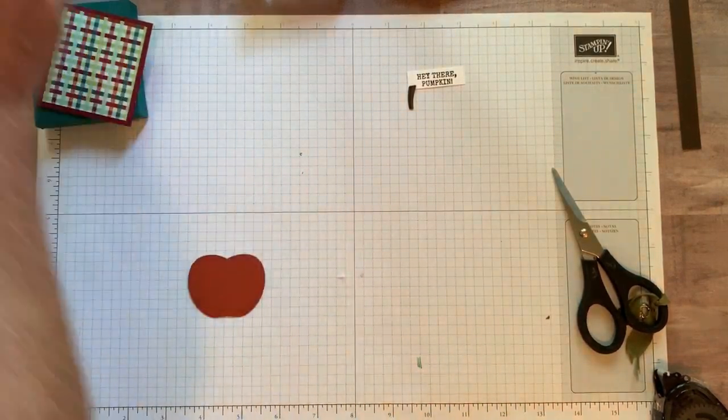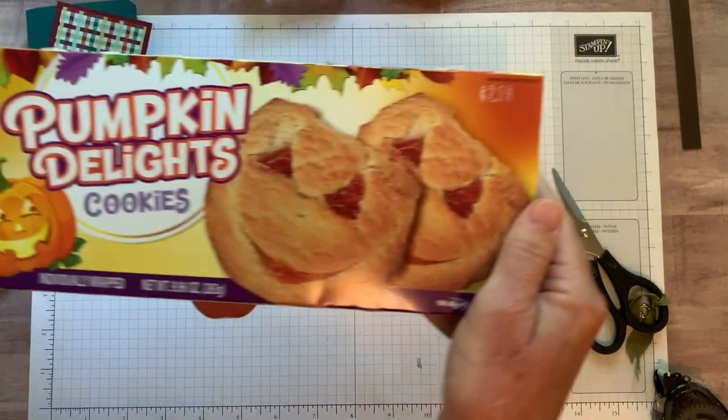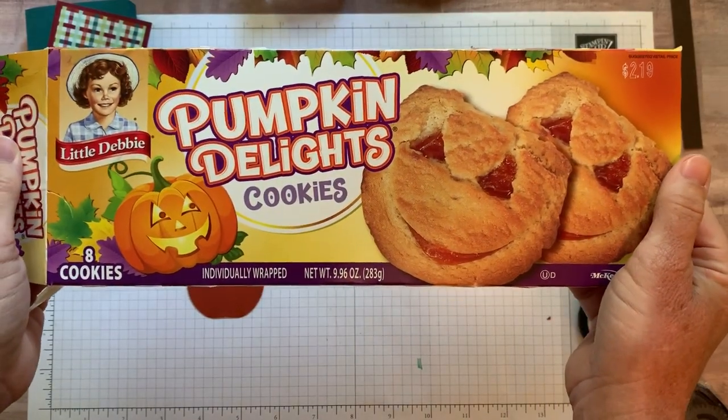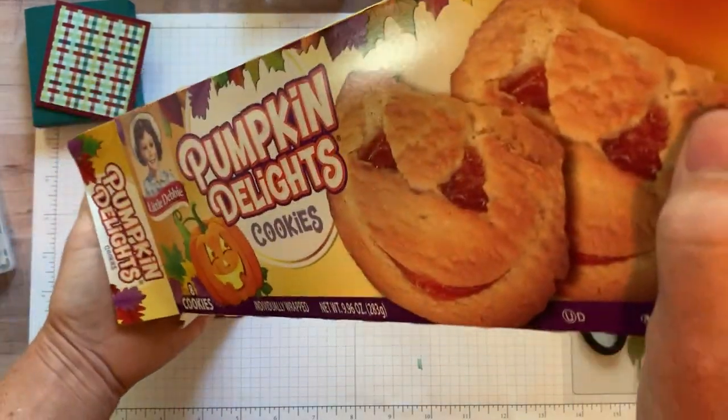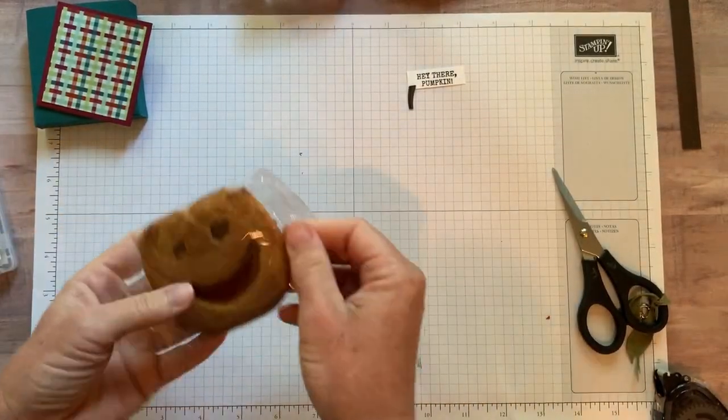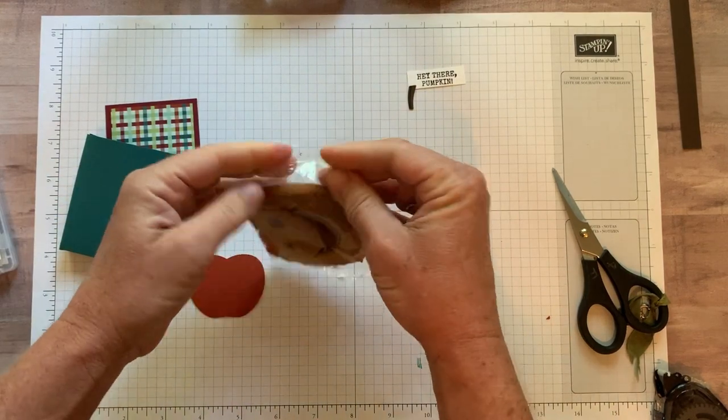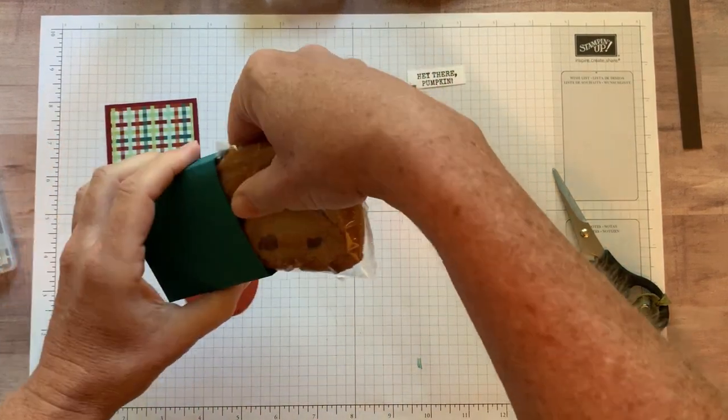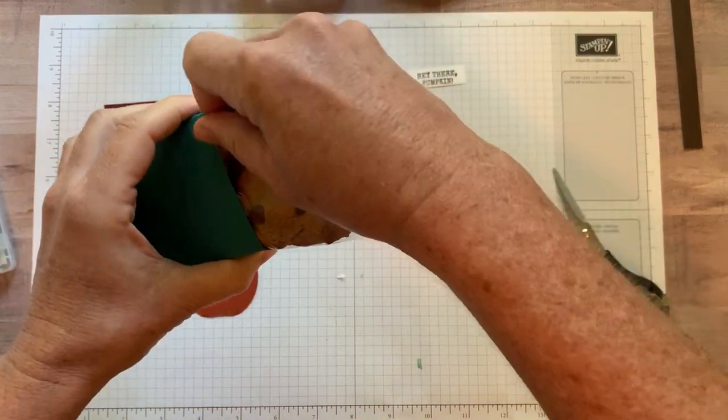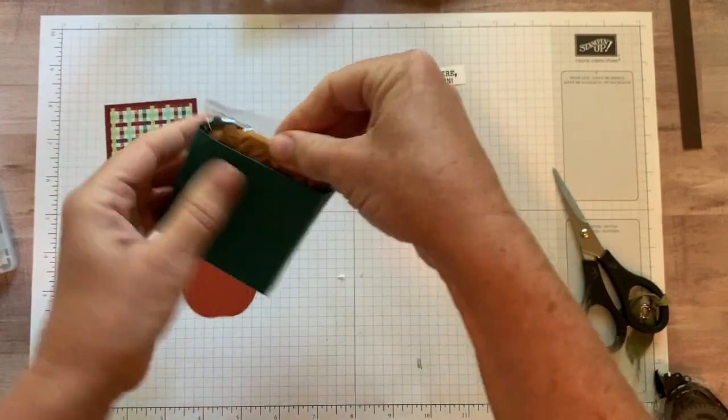Now I'm going to show you what we're putting inside. So these are little Debbie pumpkin delight cookies, they're called. So you can get these probably at any grocery store, Walmart, whatever you like. So we are going to, I like to kind of fold that down a little bit. And then he just slips in there. Right.